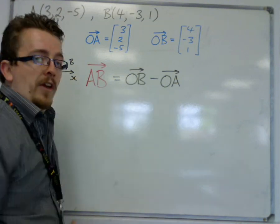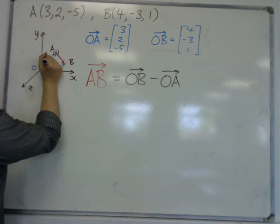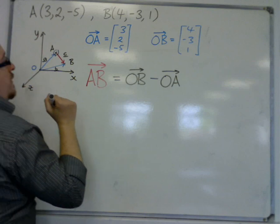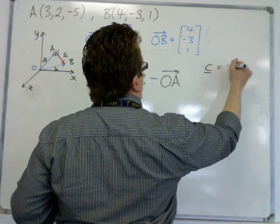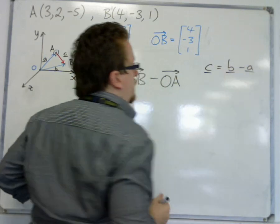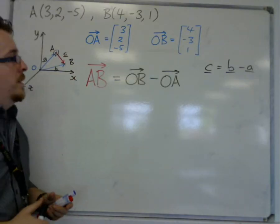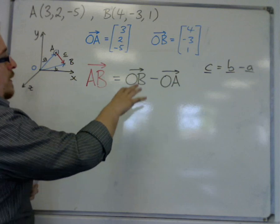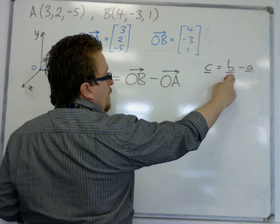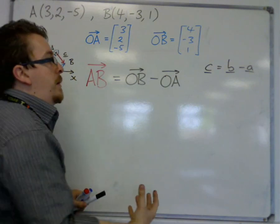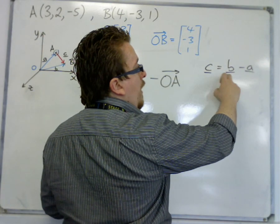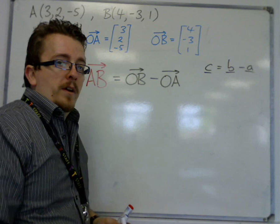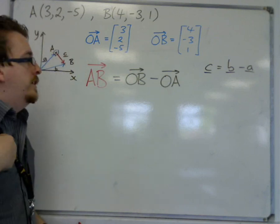AB is equal to OB minus OA. If we've labeled these vectors as that being c, that being a, and that being b, then I could say that c equals b minus a. Notice how there are different vector notations depending on what you read. Some vectors will be in bold, but because I can't write in bold I put a line underneath. Or I could represent it as OB with an arrow on top. You won't be penalized for using one or the other.